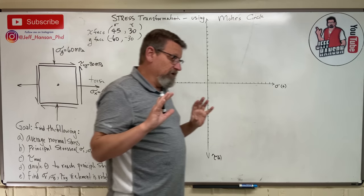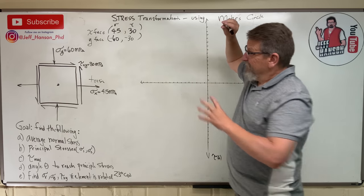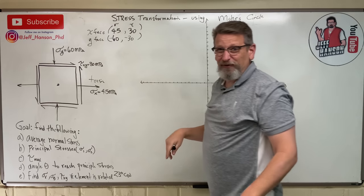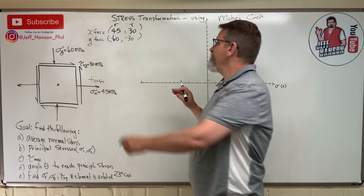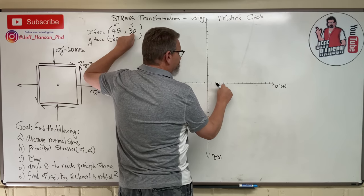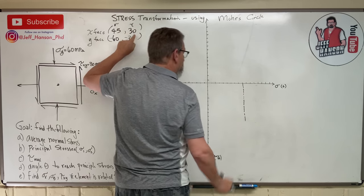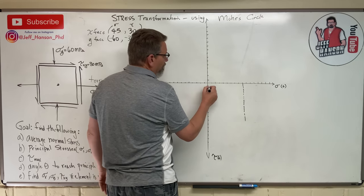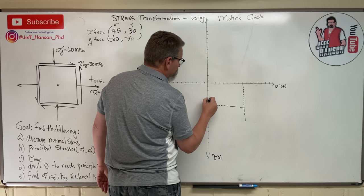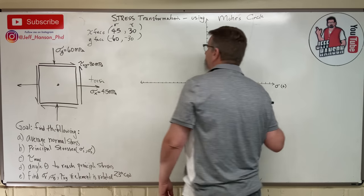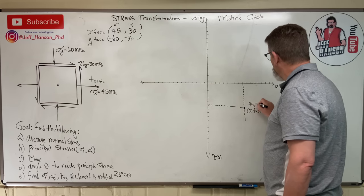So once you have the coordinate points — that's pretty straightforward. Let's plot them. For the x-face: sigma = 45, tau = positive 30. Positive 30 is down. So that point is at (45, 30) below the axis — and I'll label this as the x-face. For the y-face: sigma = negative 60, tau = negative 30, which is up above the axis. That point is at (−60, −30) — and I'll label that as the y-face.